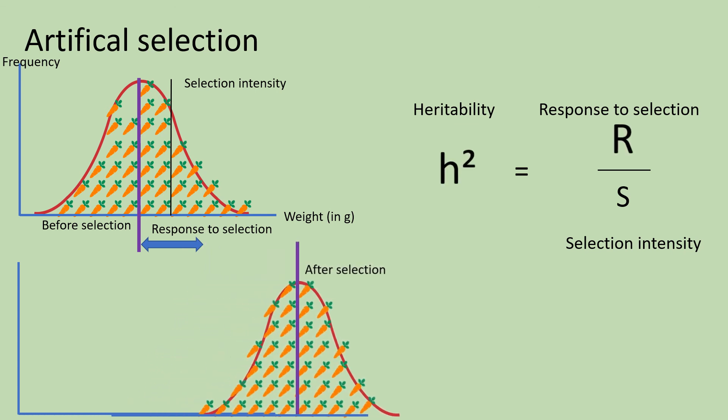If the response to selection is high, even when intensity selection is low, then the trait has high heritability. Inversely, if the response to selection is low, even when selection intensity is high, then the heritability of the trait is low and other techniques might be used to improve its yield, such as improving the environmental conditions.